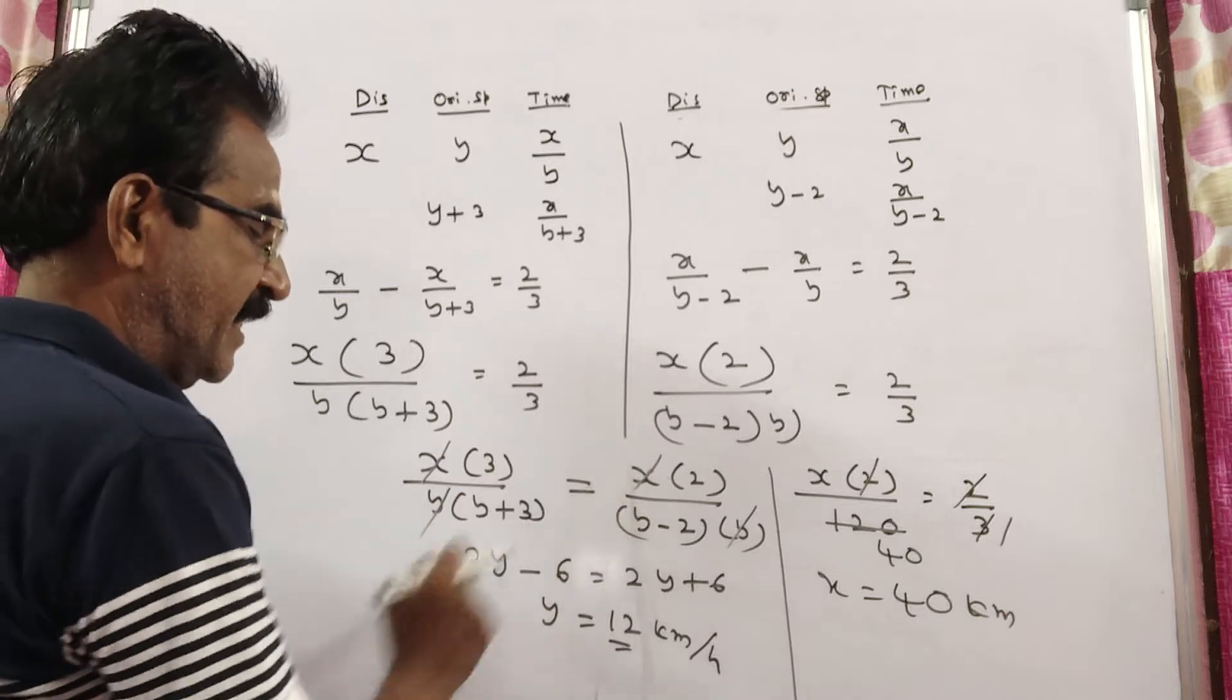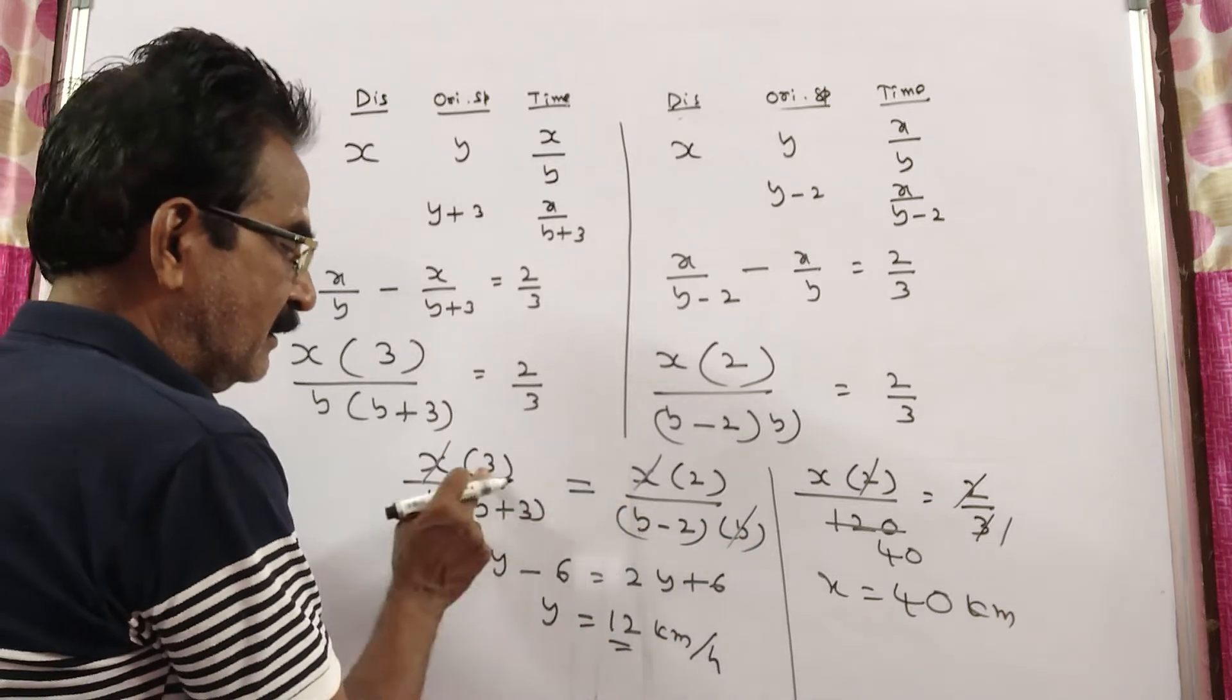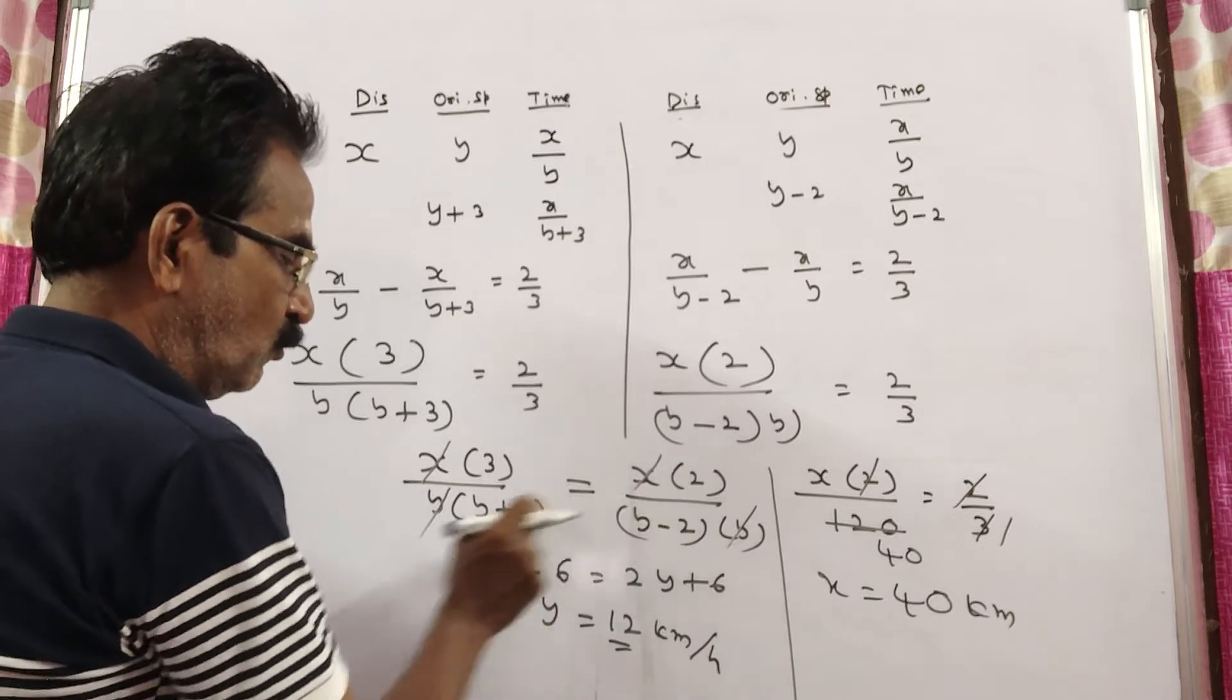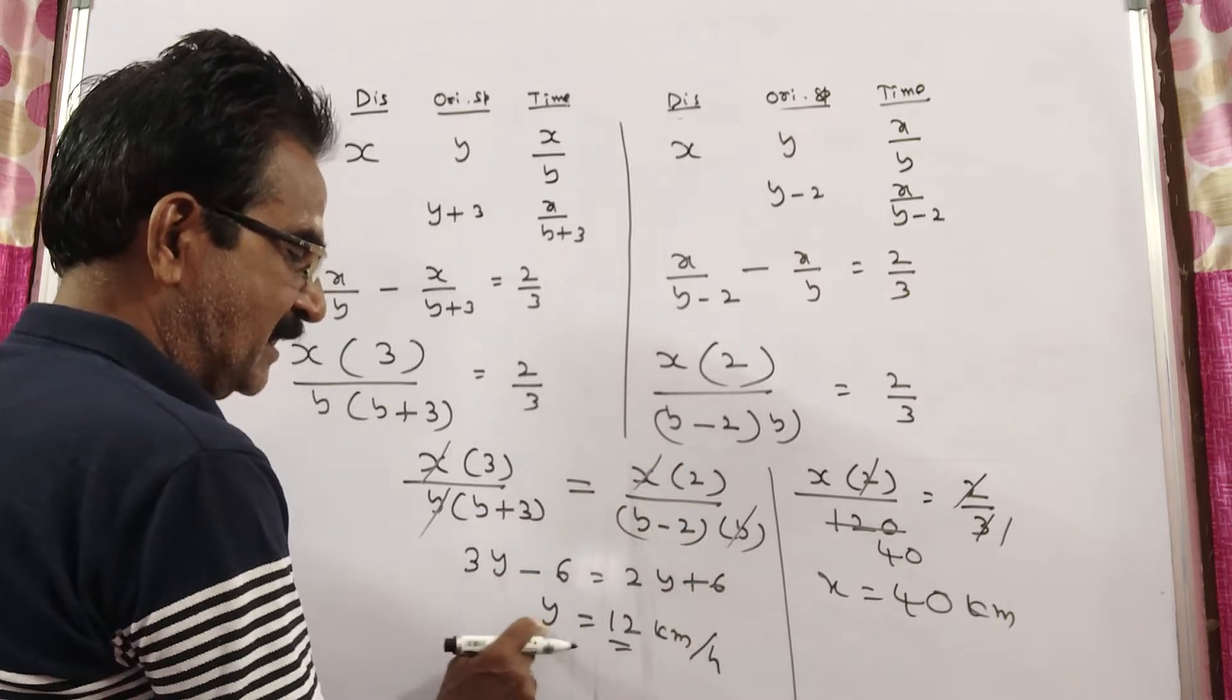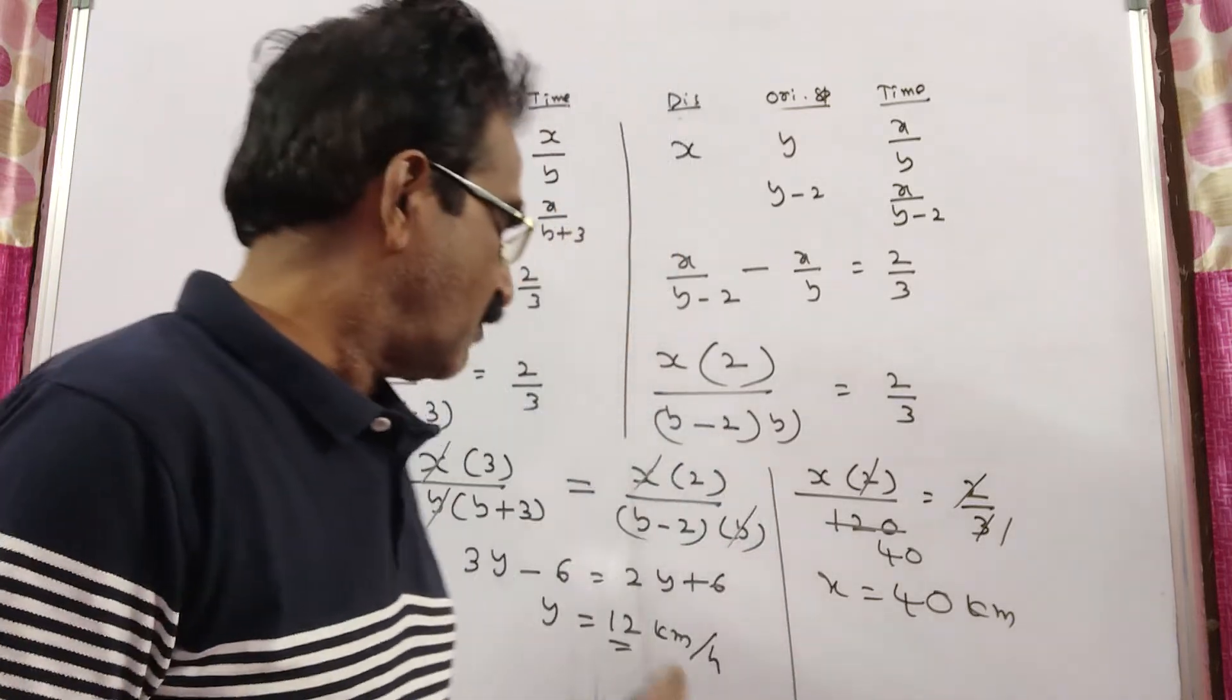Now x gets cancelled, y gets cancelled. So 3y minus 6 is equal to 2y plus 6. It implies y is equal to 12 km/h. Let us substitute this y value.